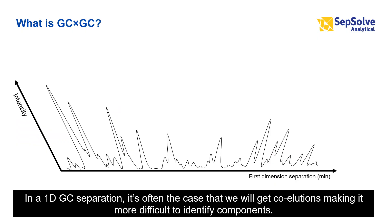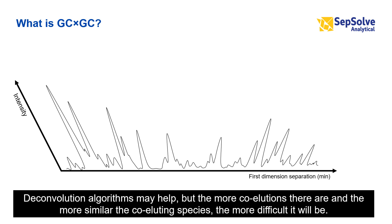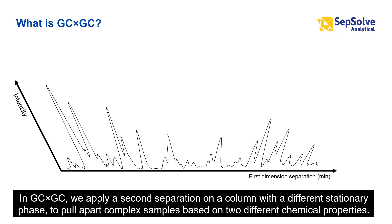In a 1D GC separation, it's often the case that we will get co-elutions, making it more difficult to identify components. Deconvolution algorithms may help, but the more co-elutions there are, and the more similar the co-eluting species, the more difficult it will be.